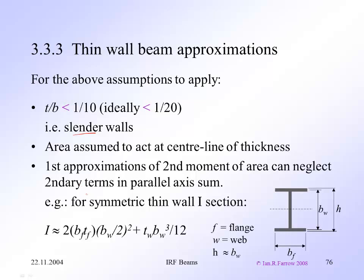For example, for an I section here, the bd cubed upon 12 contribution from the webs is much, much smaller than the a y squared. So the web contribution simplifies to this. That assumption doesn't apply for the flange. So we use the bd cubed upon 12.